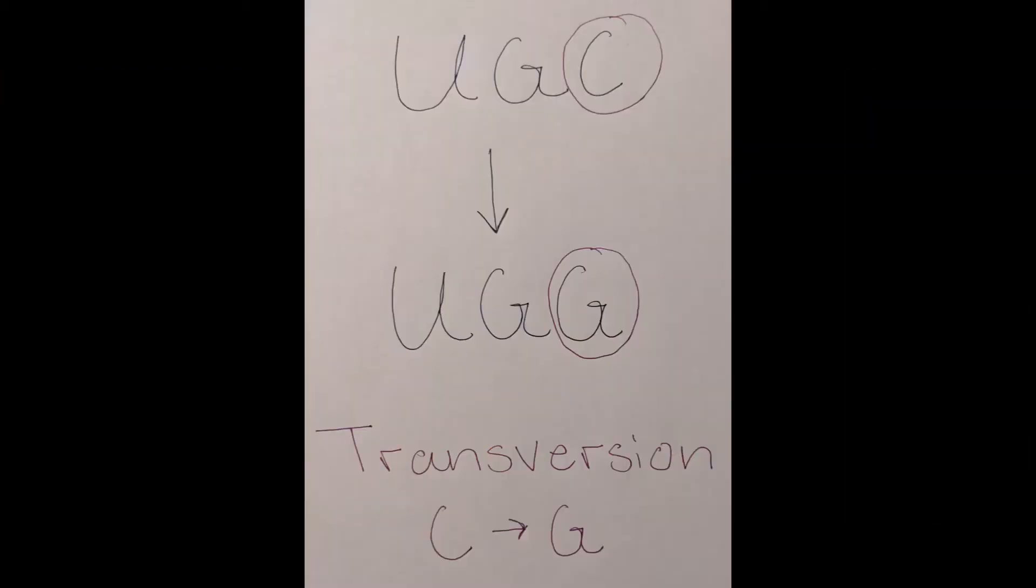In this mutation, you can see that a cytosine was substituted for guanine. This is a transversion mutation because pyrimidine was swapped for purine. The amino acid cysteine now becomes tryptophan when translated.